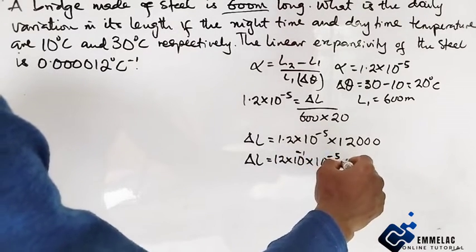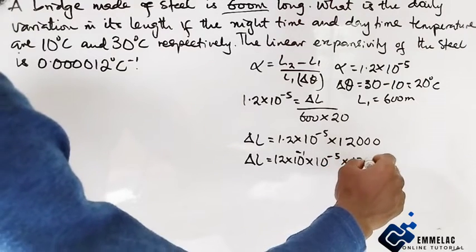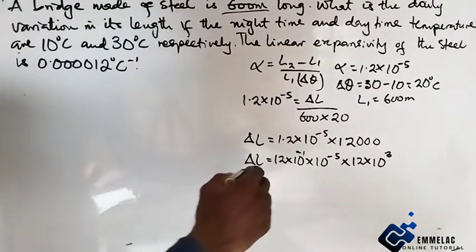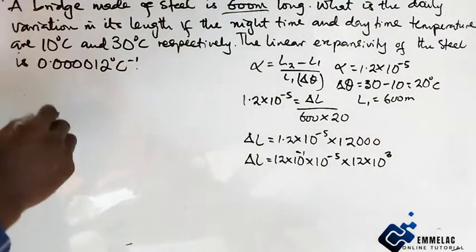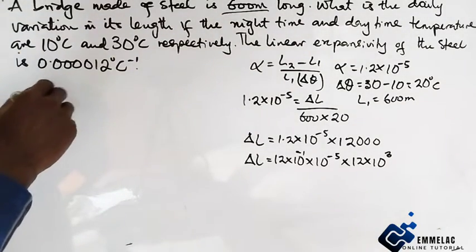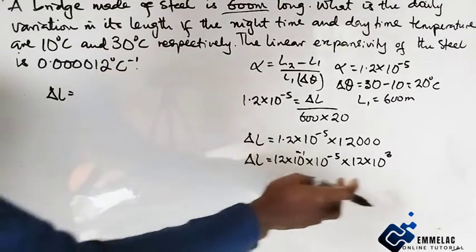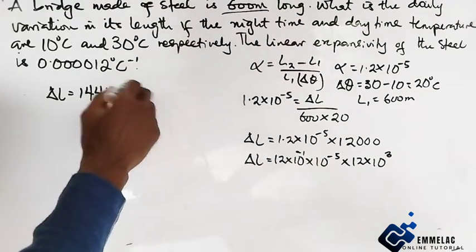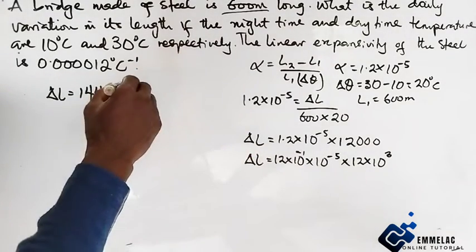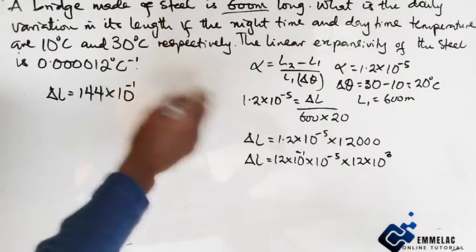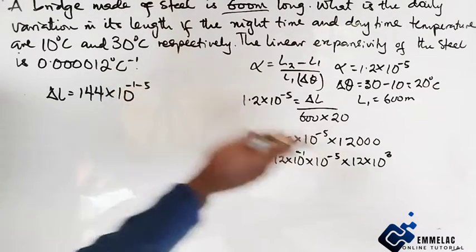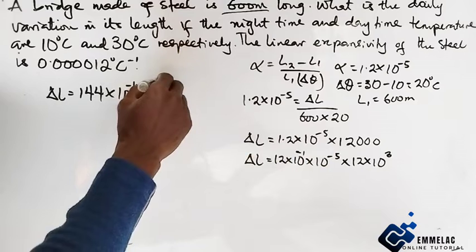Now with this we have 144 times 10 raised to the power, using the indices we have -1, minus 5 rather, then plus 3.